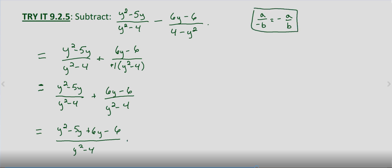So now combining like terms, we end up with y squared plus y minus six over y squared minus four.